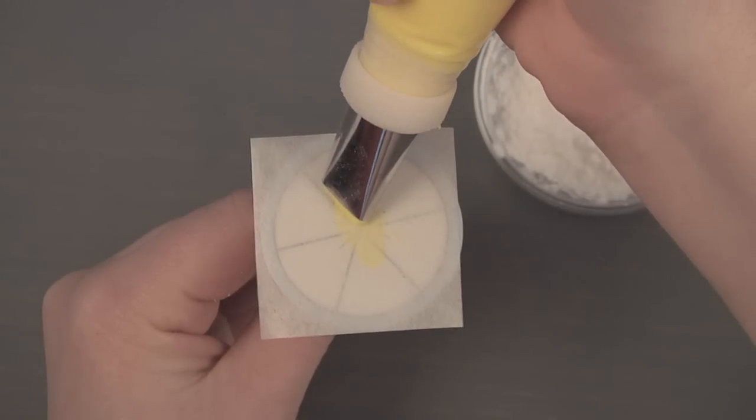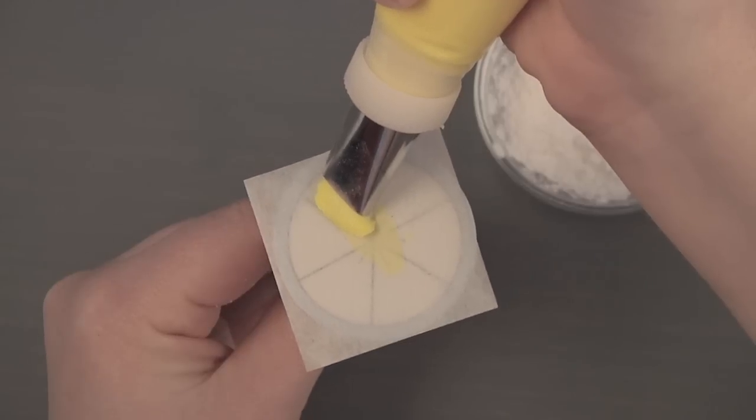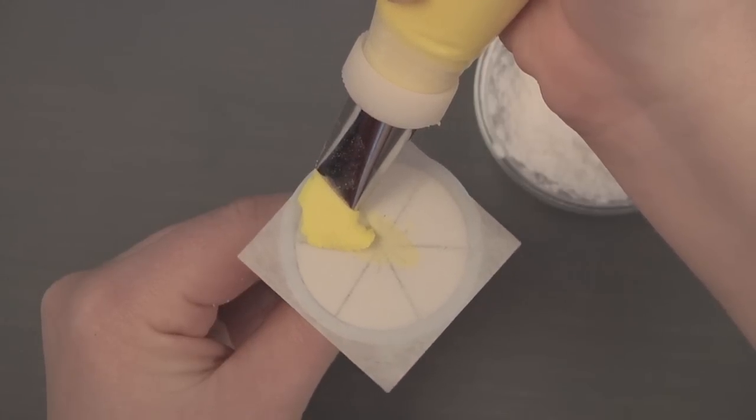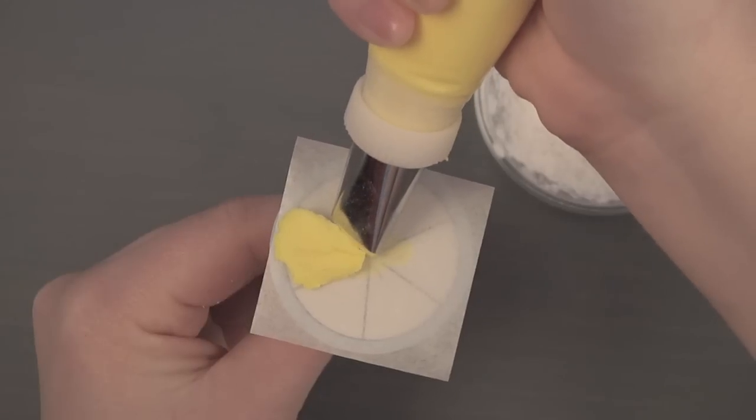Hold your decorating bag with tip 104 at a 45 degree angle at 3 o'clock with the wide end lightly touching the center of the nail. Using steady pressure, move out then back to center as you spin the nail one sixth of a turn.